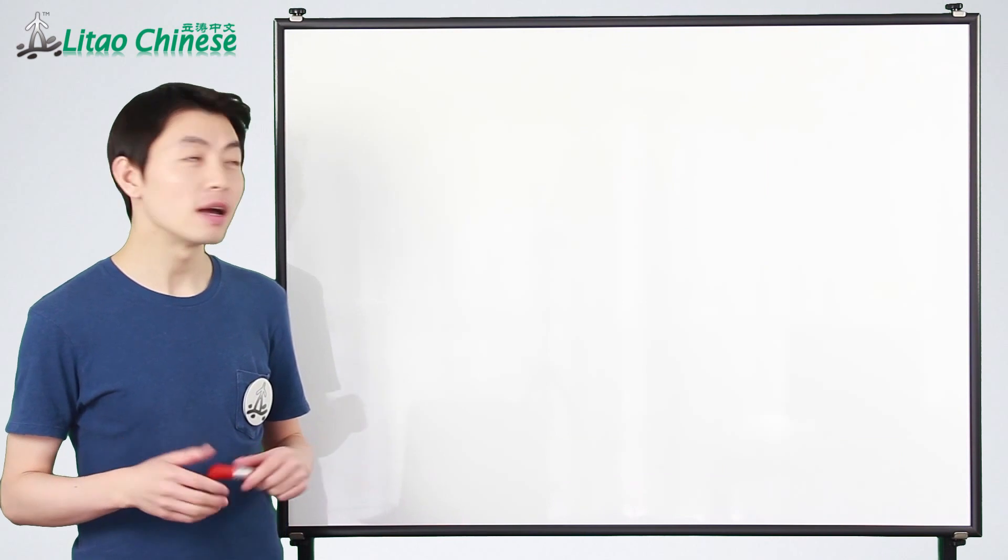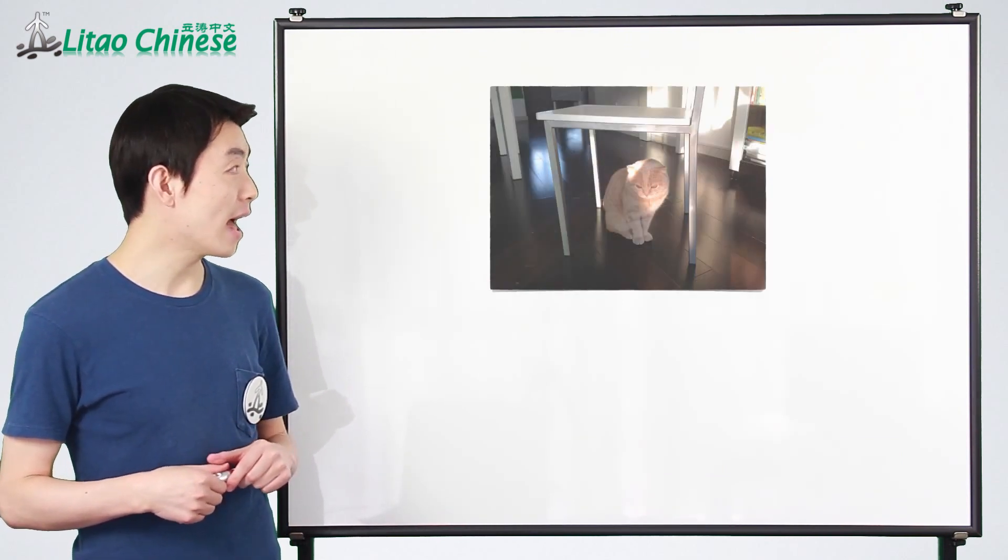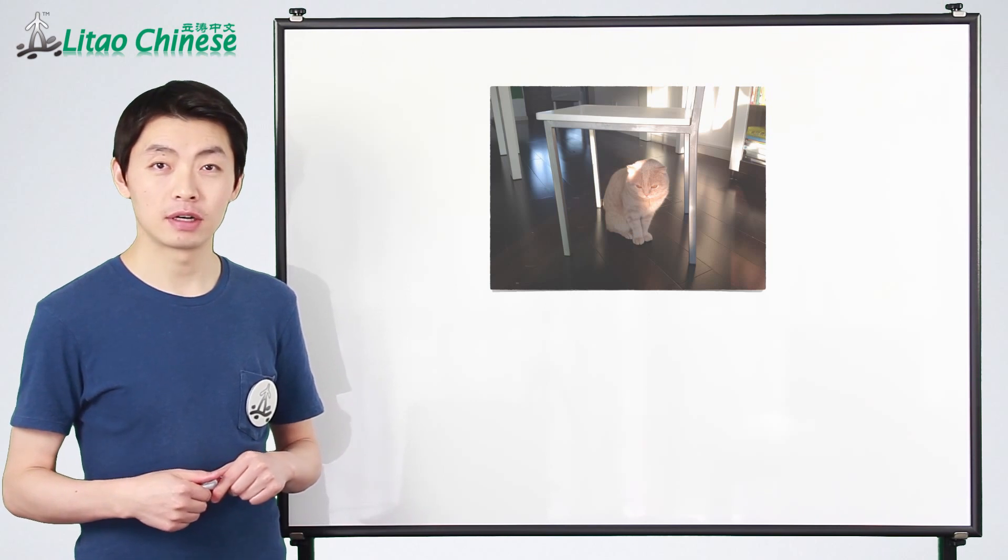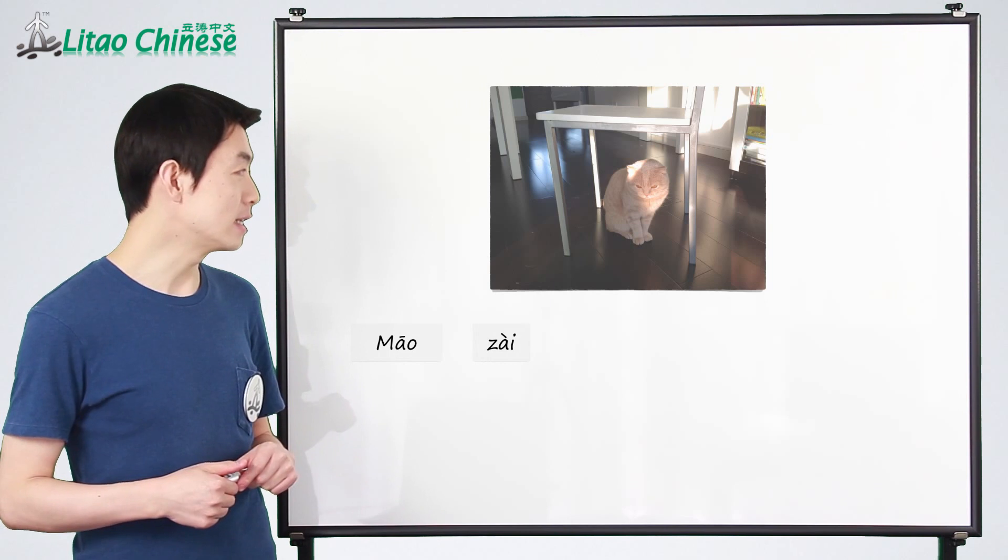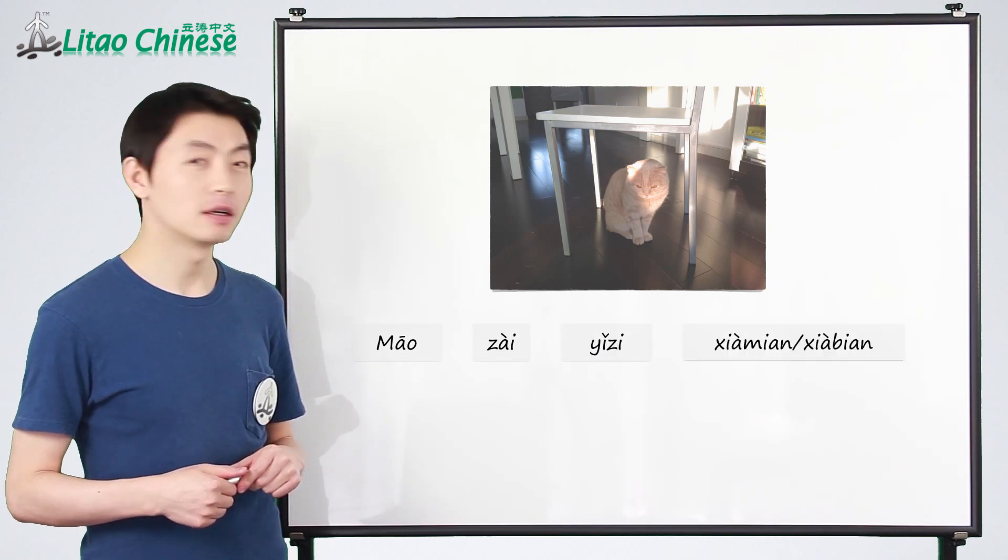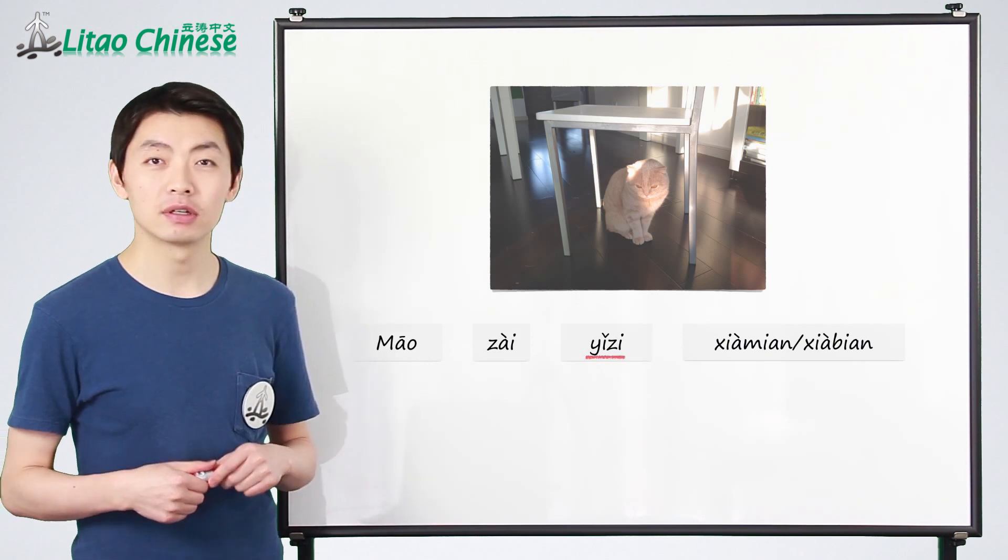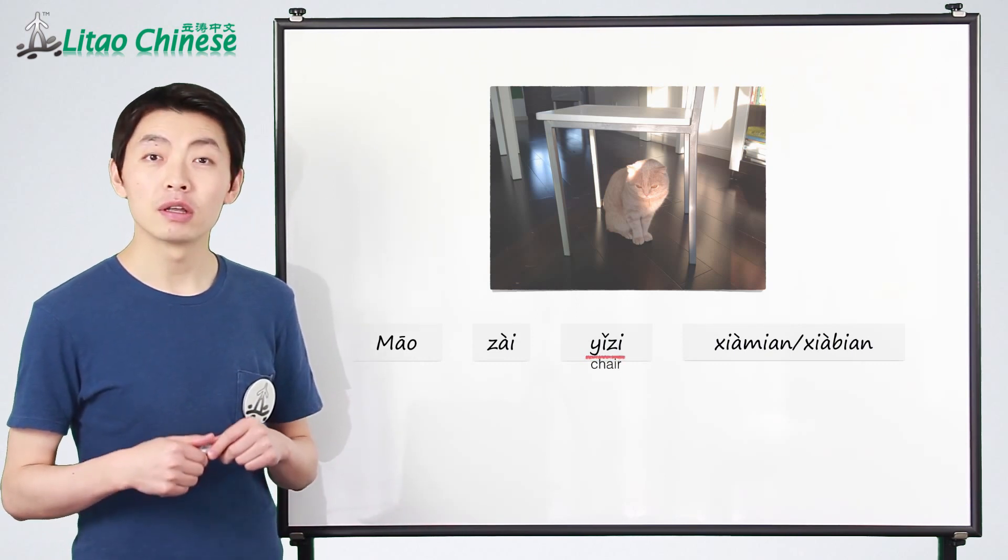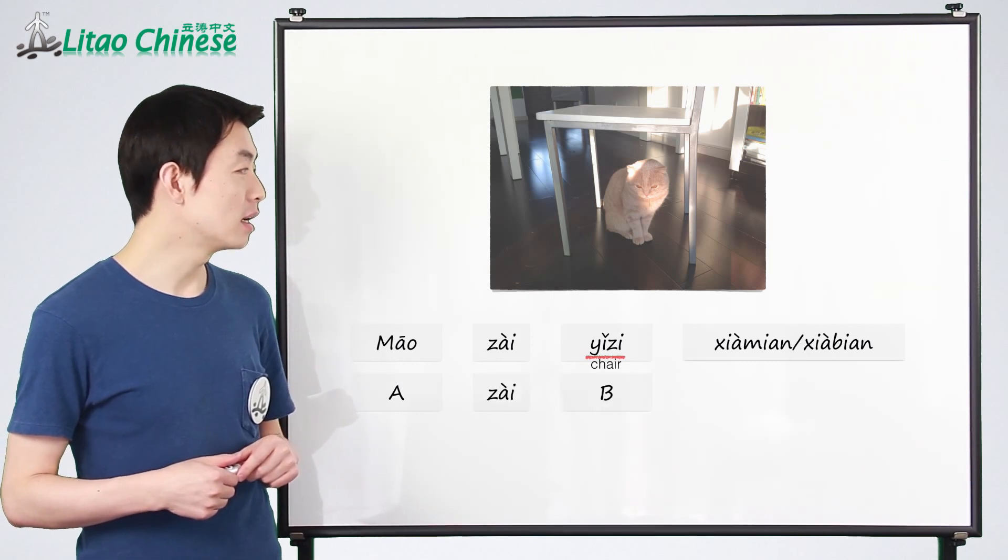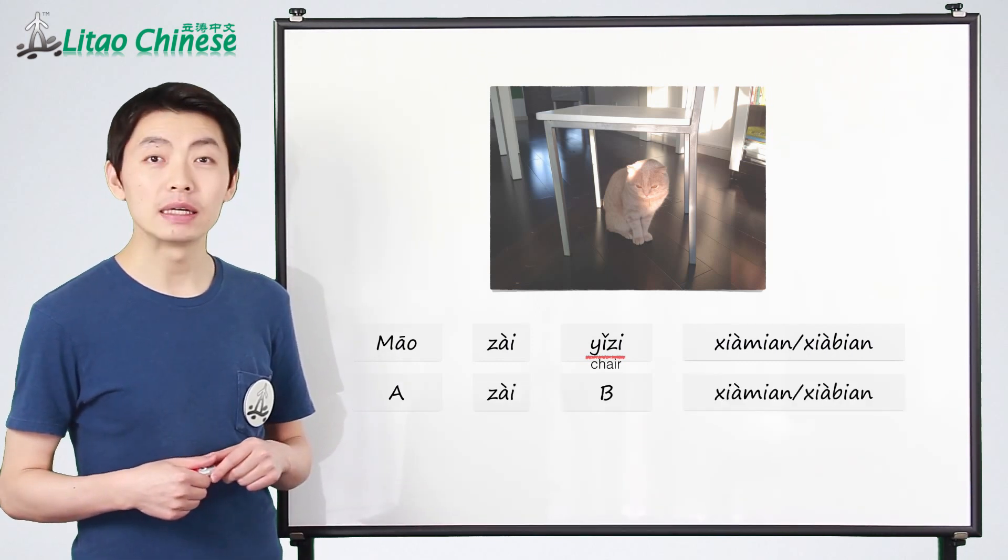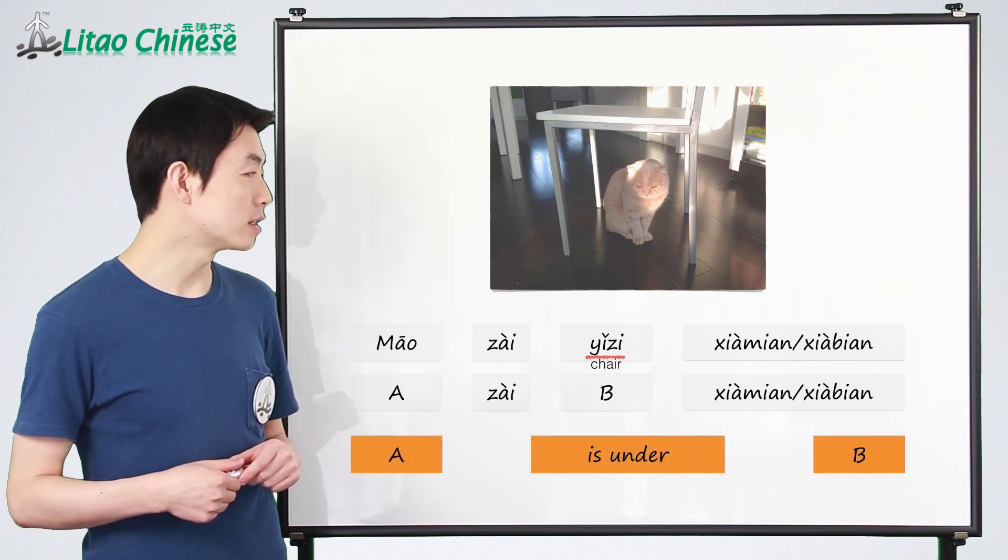In the second picture, the cat is under the chair. In Chinese, you can say 猫在椅子下面 or 下边. 椅子 means chair, so the structure A zai bi shang mian or 下边 means A is under B.